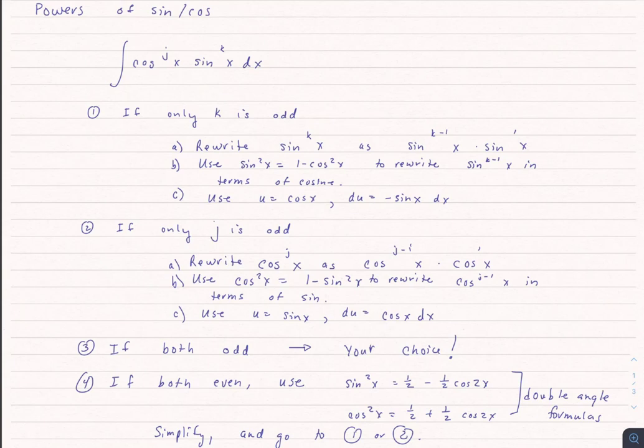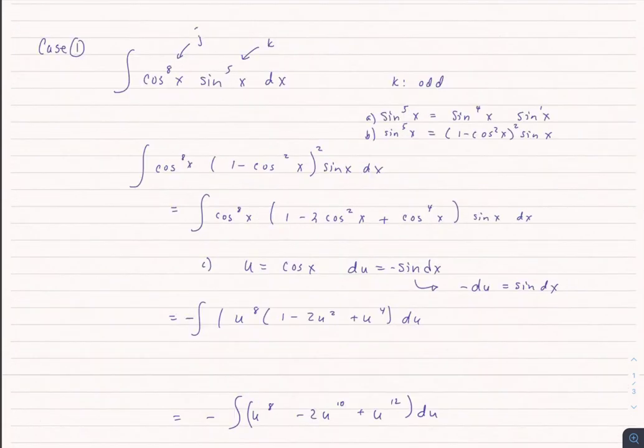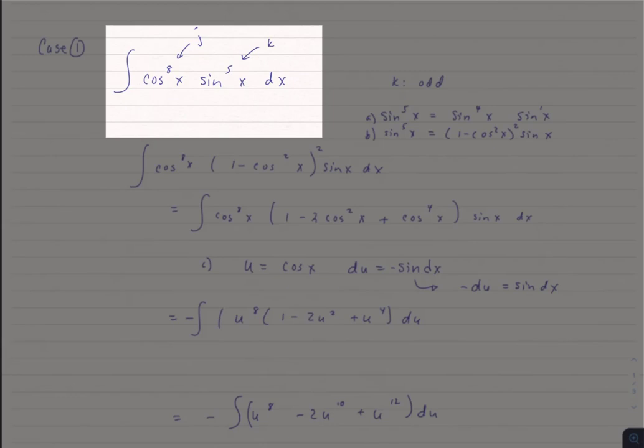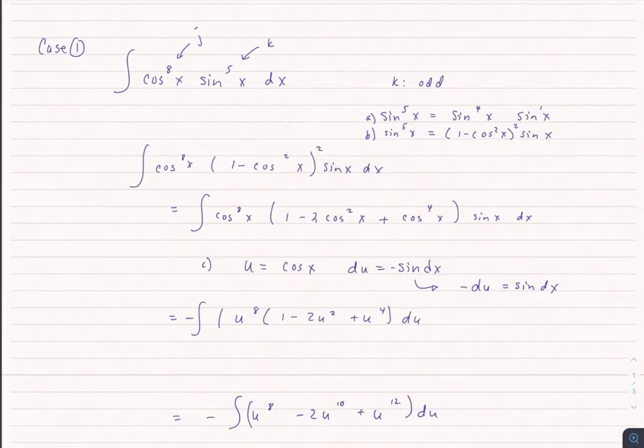Let's do some quick examples. Let's start off with case number one. Let's do cosine to the eighth power of x times sine to the fifth power of x dx. J is 8, k is 5. We find that this is case one because the sine exponent is what's odd.